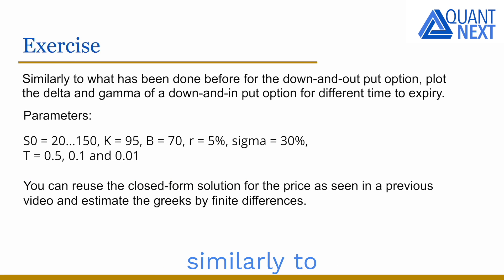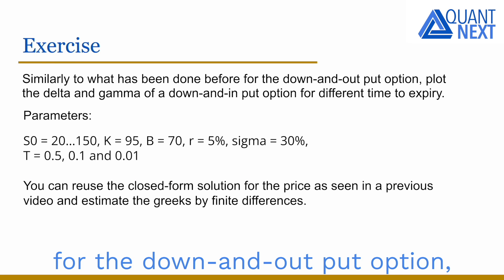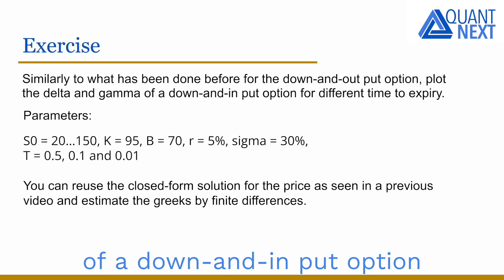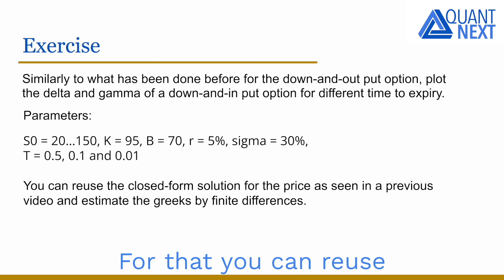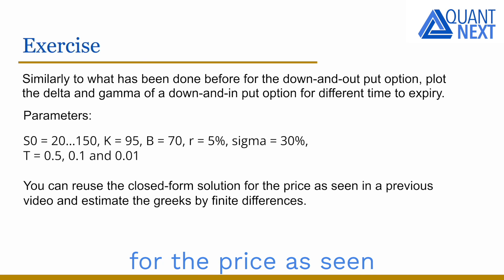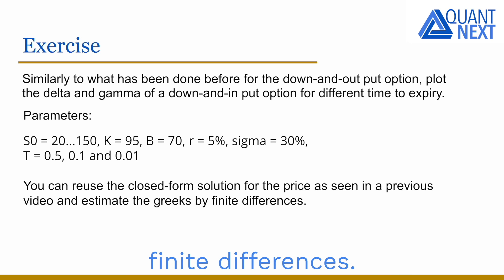As an exercise, similarly to what has been done before for the down-and-out put option, plot the delta and gamma of a down-and-in put option for different times to expiry with the following parameters. For that, you can reuse the closed-form solution for the price as seen in a previous video and estimate the Greeks by finite differences.